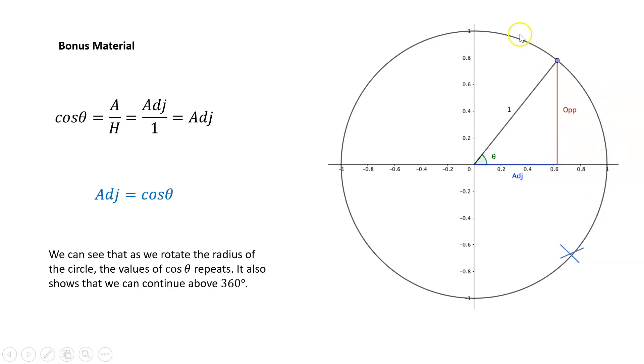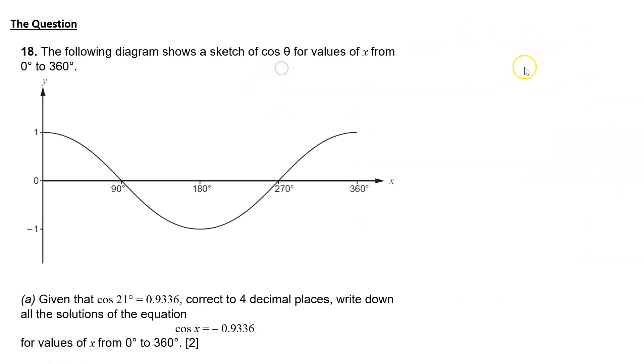But I can carry on past 360. So it can go on forever and ever, like our cos curve. And we have here in the question, the following diagram shows a sketch of cos theta for values of x from 0 to 360 degrees. So there's our cos curve, but limited between 0 and 360. Of course, it goes on and on.